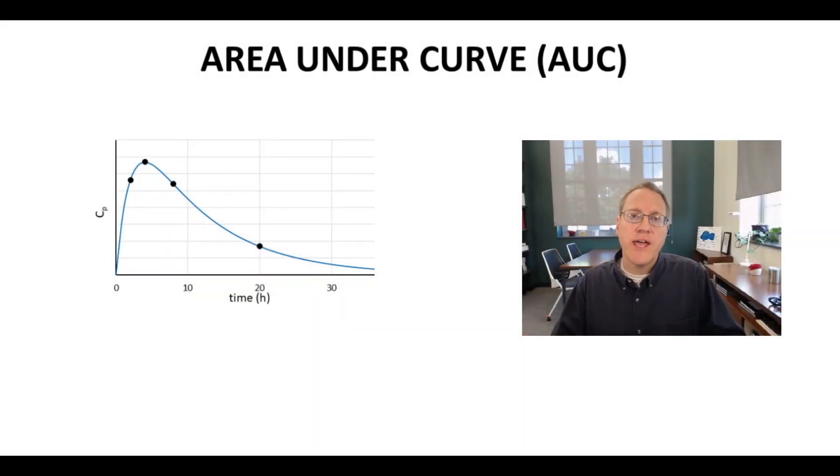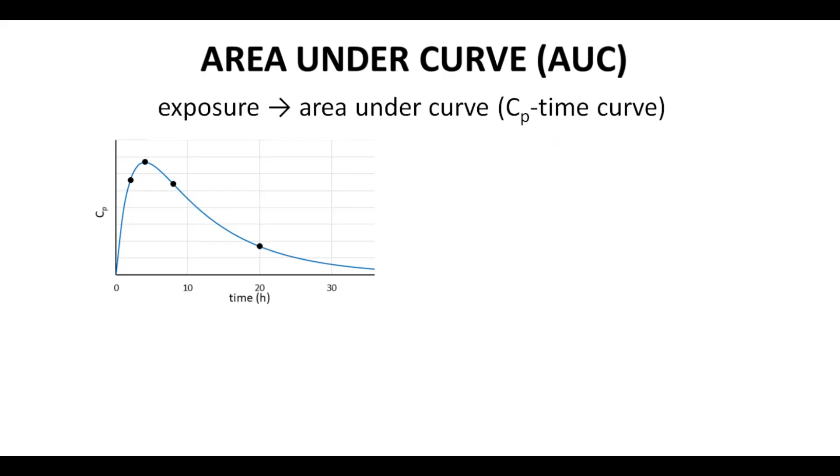In healthcare, a drug's exposure is quantified in terms of plasma concentration and time, and so it's natural that we will use a CP time curve to determine a drug's exposure through something called area under curve. So exposure is equal to the measured area under curve for our CP time plot.